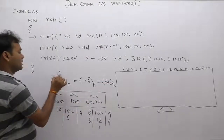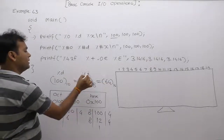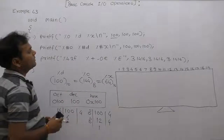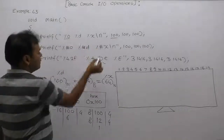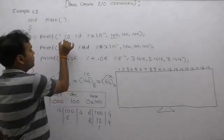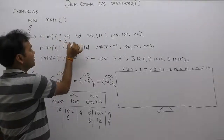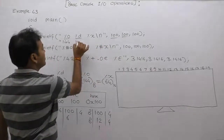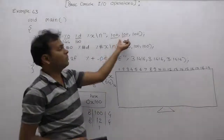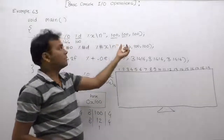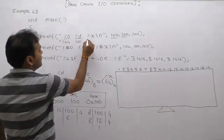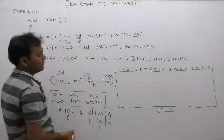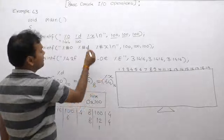In case of %d, %o, and %x format specifiers: when the first printf statement is executed, for %o the value is replaced as 144. For %d, the value is replaced as 100 — there is no conversion because the value is already in decimal and we want to display it in decimal. For %x, 100 is displayed in hexadecimal, and the equivalent hexadecimal value is 64.